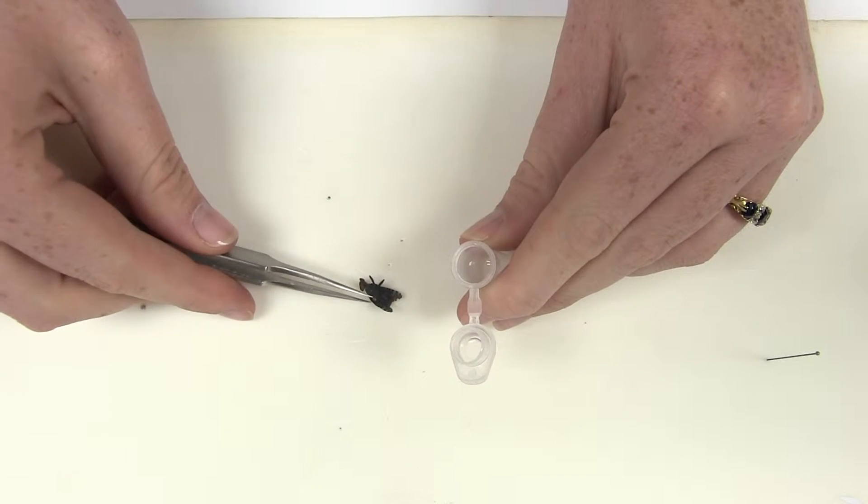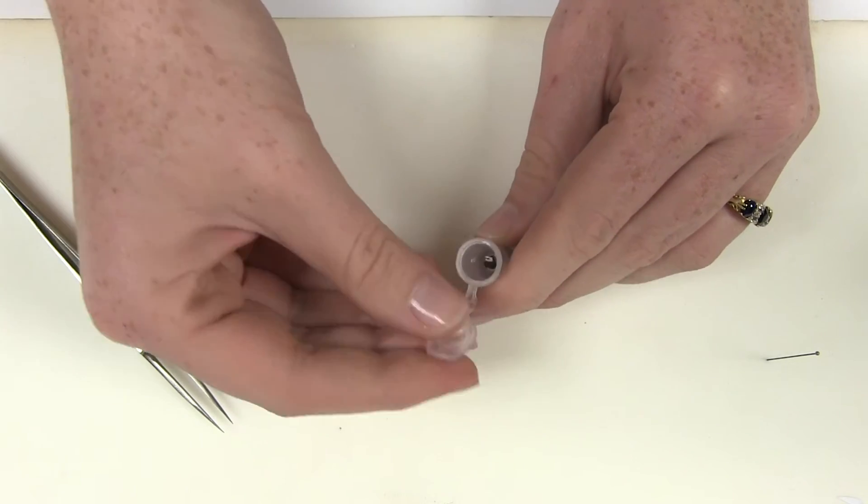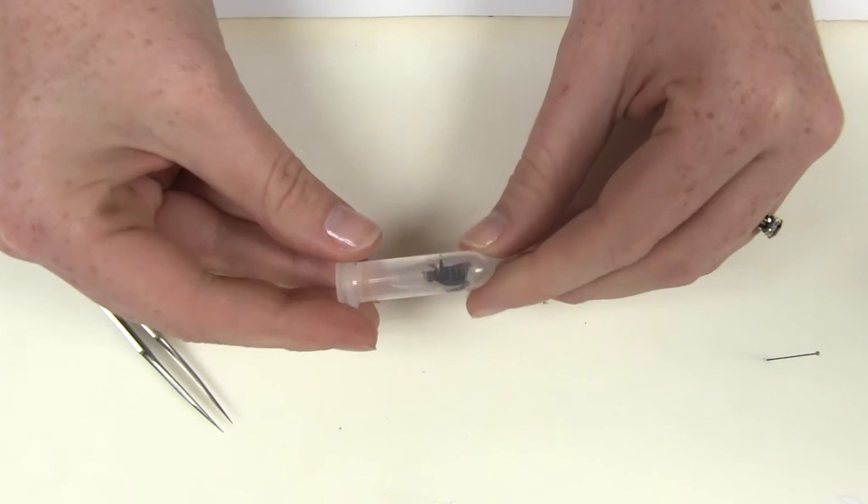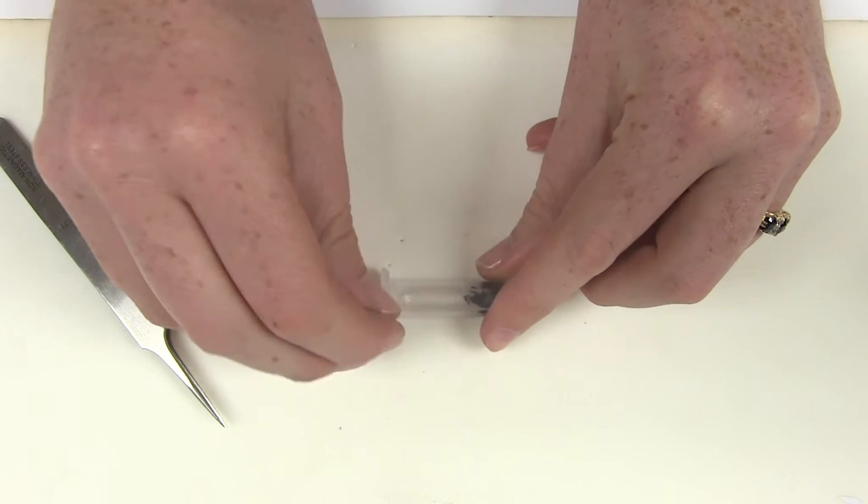Place your insect in the tube and, if necessary, fill the tube with some more fluid so that the insect is completely submerged. Use a straight pin or an insect pin to pin the tube in place.